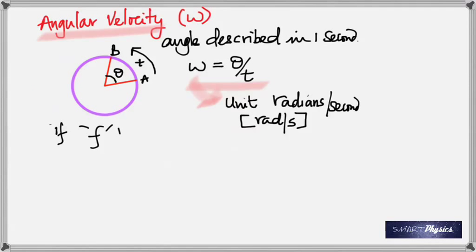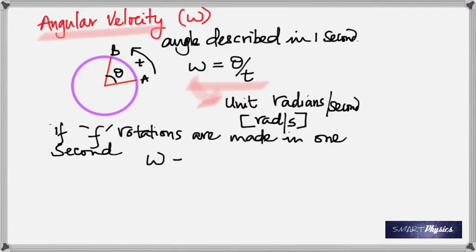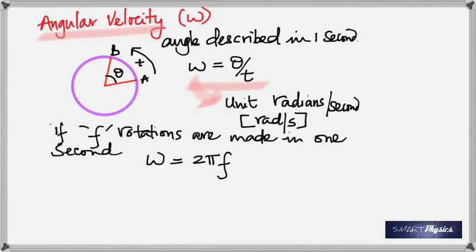If an object makes f rotations in one second, that f is called frequency — the number of rotations per second is the linear frequency. If f rotations are made per second, the relation is omega equals 2πf. Angular velocity is also called angular frequency. Frequency equals one over time period.